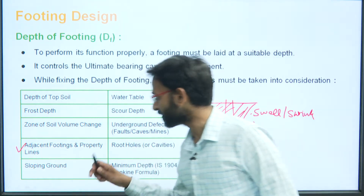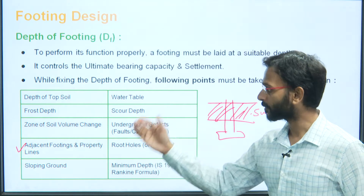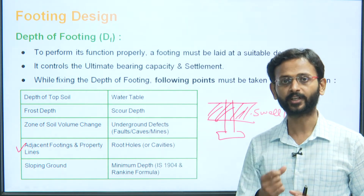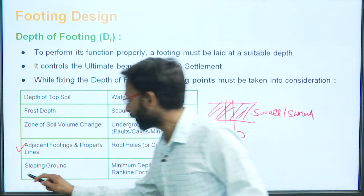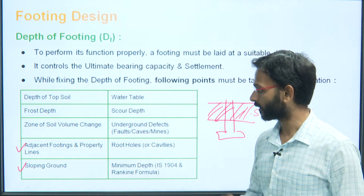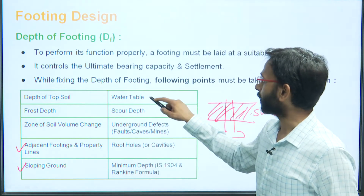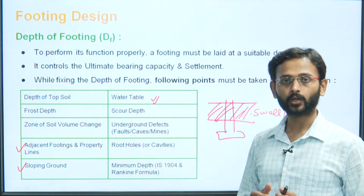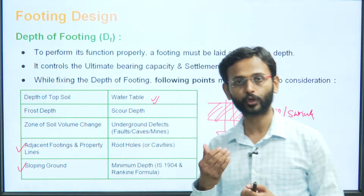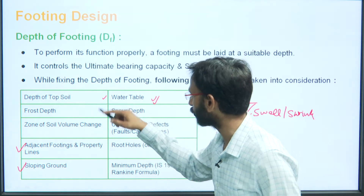Adjacent footings and property lines — we have discussed this before and will briefly revisit it. The same applies to sloping ground, which will also be discussed in a few slides. Water table — when the water table is present, it affects the ultimate bearing capacity, reducing it. So the water table has to be taken into consideration.